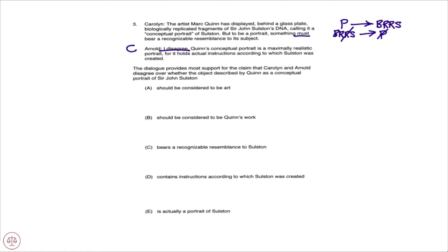Now that we have this passage clear, we turn our attention to the question stem: 'The dialogue provides most support for the claim that Caroline and Arnold disagree over whether the object described by Quinn as a conceptual portrait of Sir John Solstyn...' Notice the phrase 'disagree over' — this is a point at issue question. We're looking for an answer choice that one person would agree with and the other would disagree with, making it the point at issue.